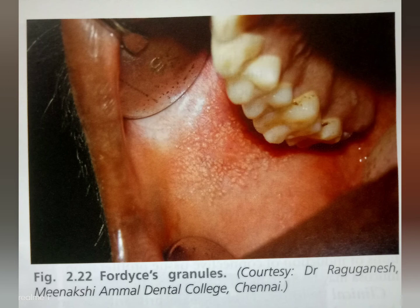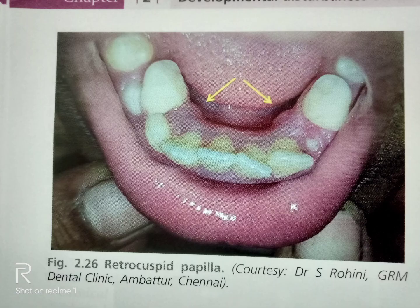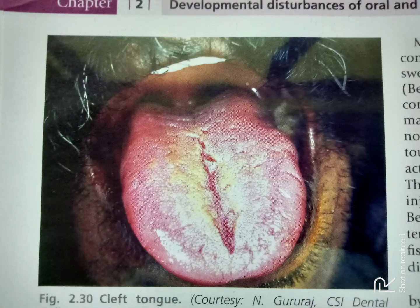Normal anatomic lymphoid structures — Fordyce granules. Retrocuspid papilla: it is a soft tissue structure, not torus mandibularis.